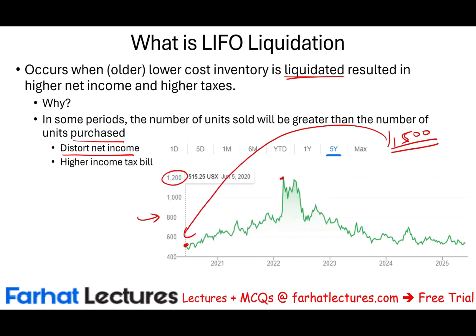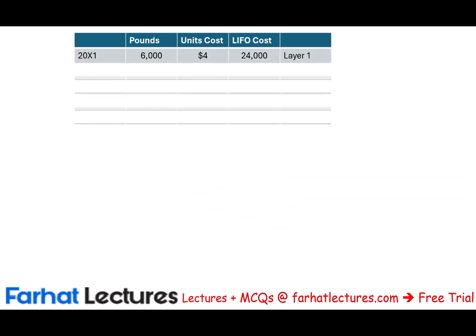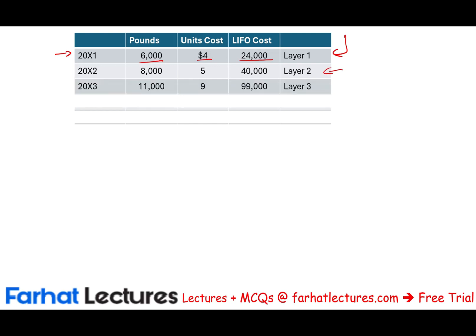With LIFO you are matching recent costs with recent sales — but if you've liquidated all your recent purchases, you have to go back to old layers of inventory. Let me show you an example. In year X1, we purchased 6,000 pounds at $4 per pound — a LIFO cost of $24,000 (Layer 1). In year X2, we purchased 8,000 pounds at $5 — $40,000 LIFO cost (Layer 2). In year X3, 11,000 pounds at $9 — $99,000 (Layer 3).